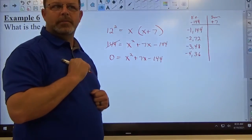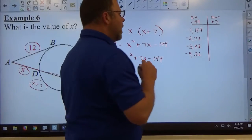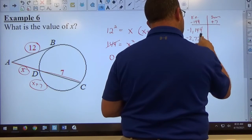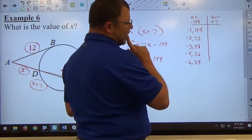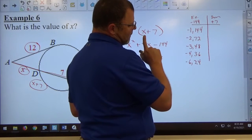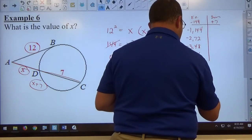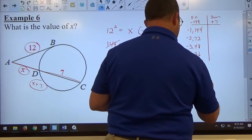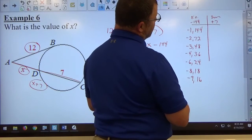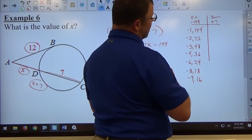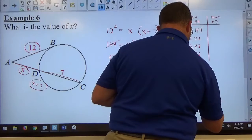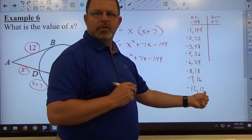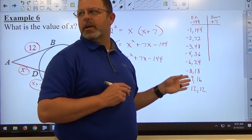Negative 5 doesn't go into it evenly so we skip that. Negative 6 times 24, 7 doesn't go into it, 8 does, negative 8 times 18, 9 negative 9 times 16, 10 doesn't, 11 doesn't, 12 times 12, negative 12 times 12. Once the number on the right is either smaller than or the same as the one on the left you've got every number possible.